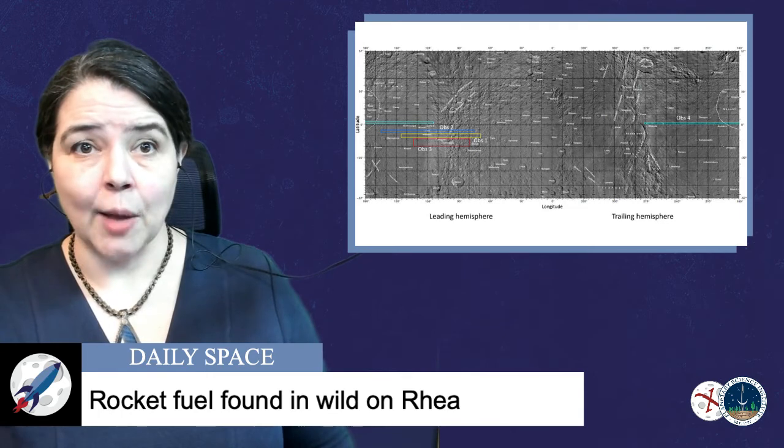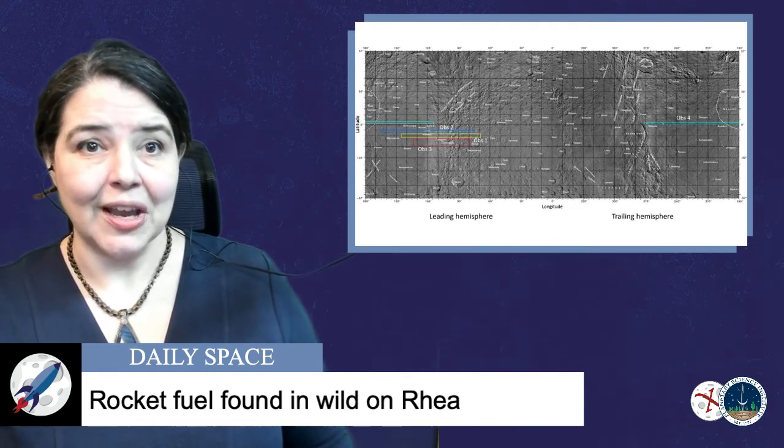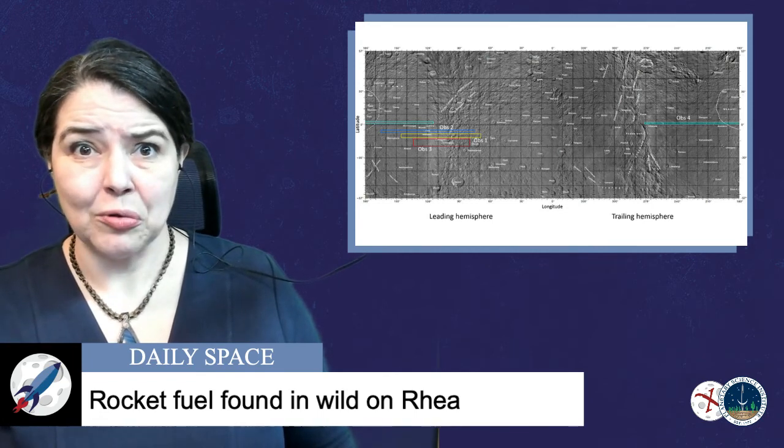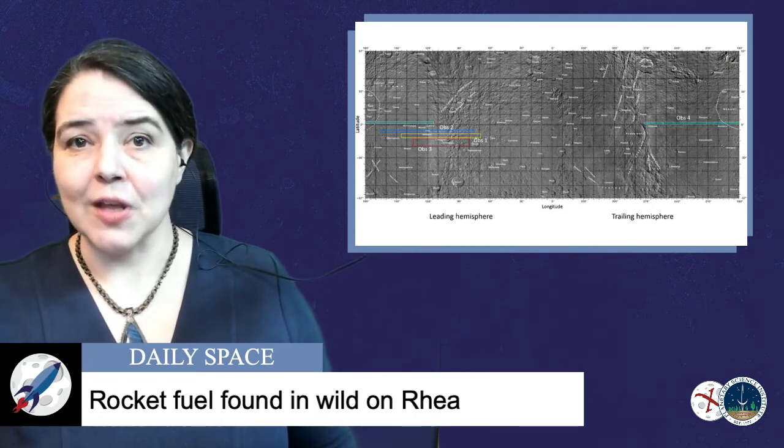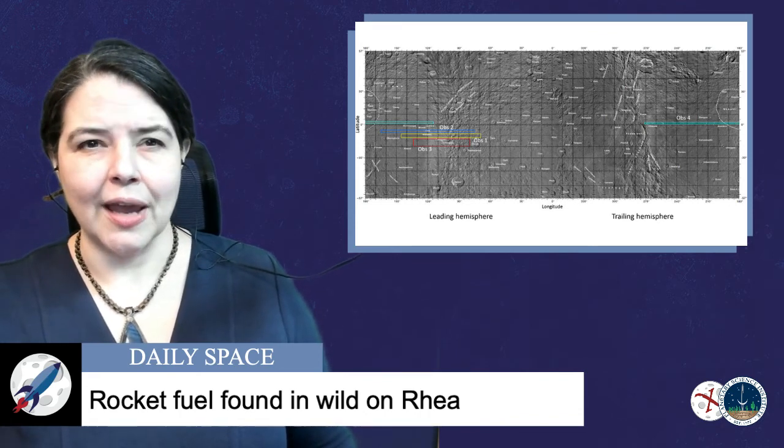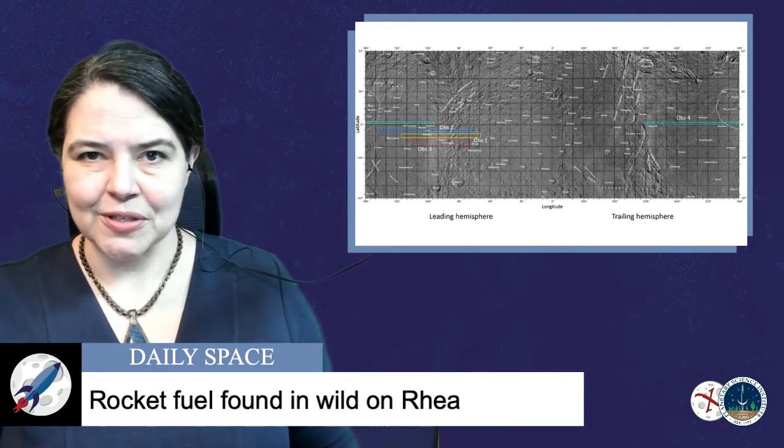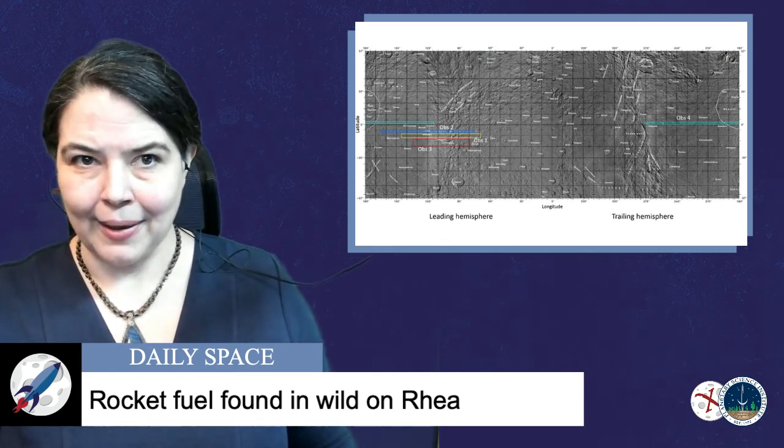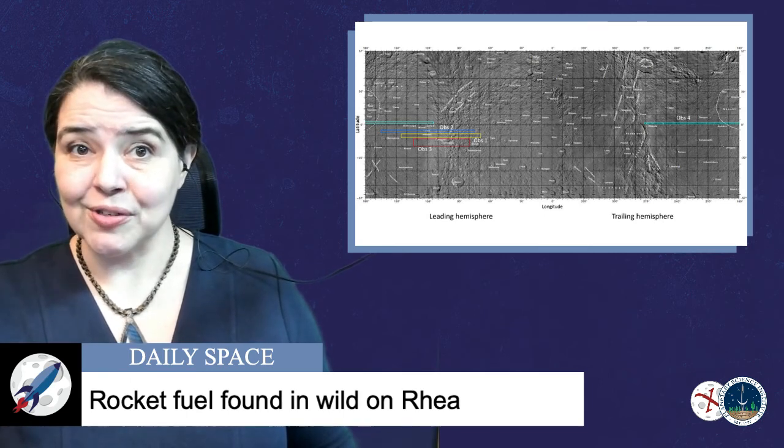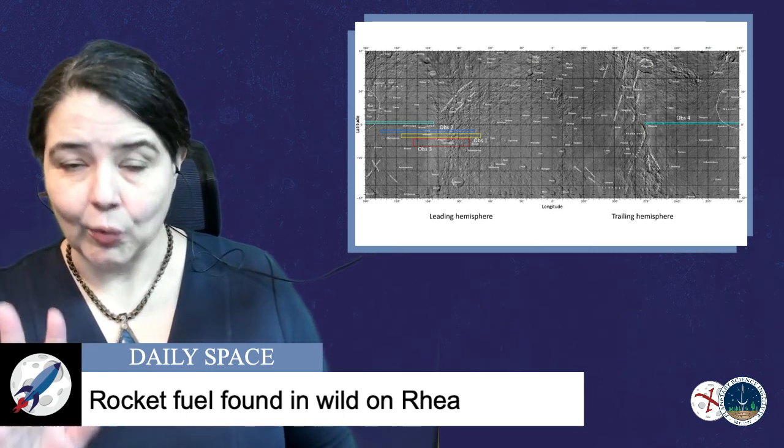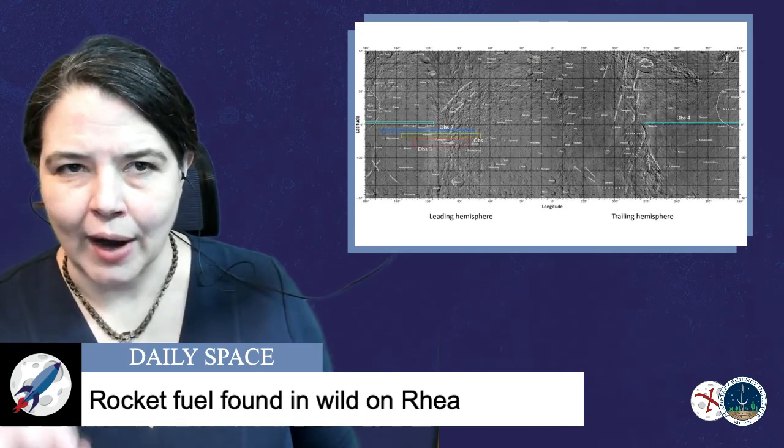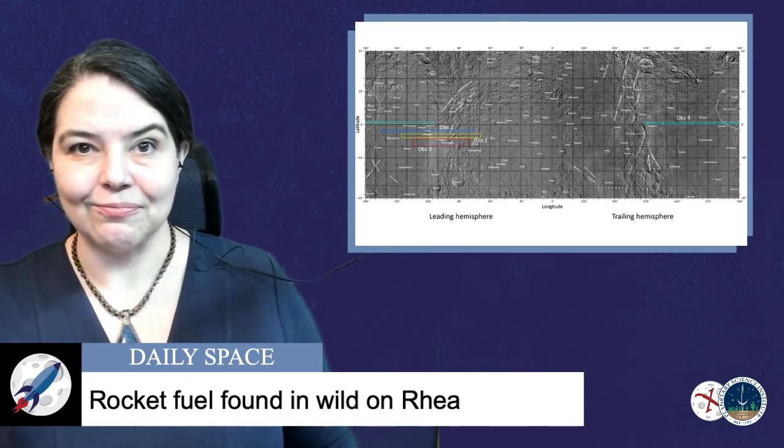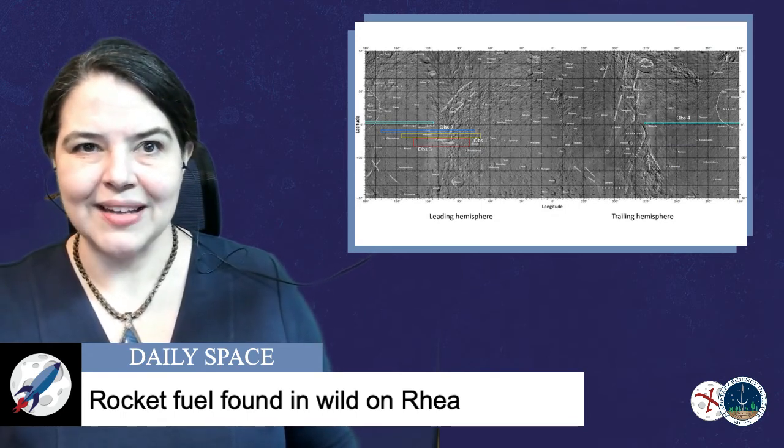As always, we want to remind you all this data comes from the amazing Cassini mission, which is still giving us new research even though it's no longer still orbiting. The team analyzed the ultraviolet spectroscopy of the moon's atmosphere and found a particular absorption feature that could be explained by either hydrazine or chlorine-containing compounds. And while hydrazine was a propellant used by Cassini, yes folks, hydrazine is rocket fuel, those thrusters were not used while observing the icy satellite flybys to prevent such contamination.